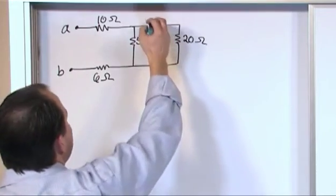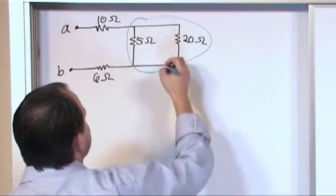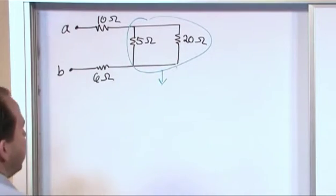What we can do though is we see these are in parallel. So we'll just kind of circle this and say alright these are in parallel.